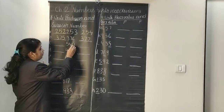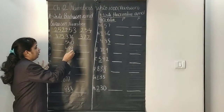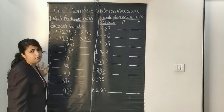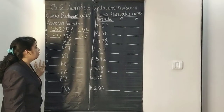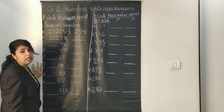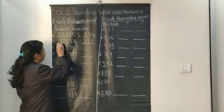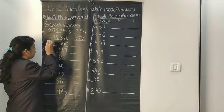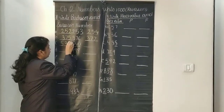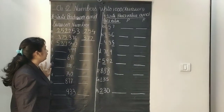Moving forward to the next number, which is 540. Now I have to check both the tens place and the ones place. The predecessor of 40 is 39, so the predecessor of 540 is 539, keeping the hundreds place the same.